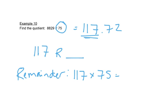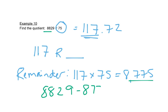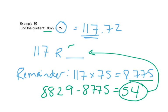So we take 117 times 75, and we get 8,775. So we have to see how far away this answer is from this answer. And to do that, we subtract those two numbers in our calculators, and we get 54. And that 54 is our remainder. So our answer is 117, with a remainder of 54.